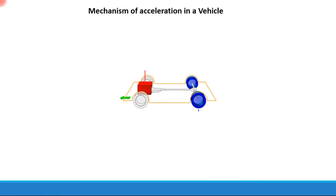Now we will have a look at the mechanism of acceleration in the vehicle — how exactly does the mechanism of acceleration come into being, and how exactly is the power generated at the engine transferred to the wheels, which results in the movement of the car. We will have a look at that process in this lecture.